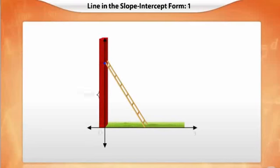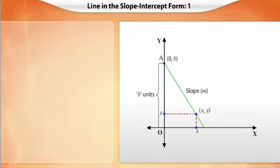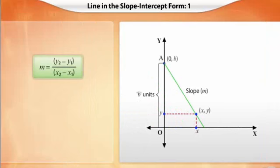Now let us see how to find the equation of the line. The line intersects the y-axis at (0, B). Let the slope of the line be M. Consider an arbitrary point (x, y) on the line. We know that the slope of the line is given by the ratio of (y2 minus y1) and (x2 minus x1), where (x1, y1) and (x2, y2) are two points on the line. Therefore, the slope of this line is equal to (y minus b) upon (x minus 0).